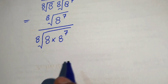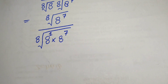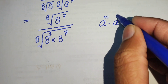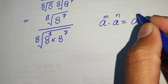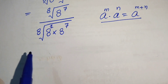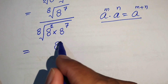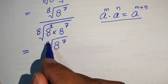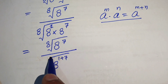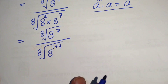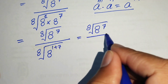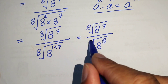We see the exponent of 8 is 1, so we apply the exponential law: a to the power of m times a to the power of n equals a to the power of m plus n. Applying this in the denominator, we add the exponents: 1 plus 7, giving us the 8th root of 8 to the power of 7 divided by the 8th root of 8 to the power of 8.